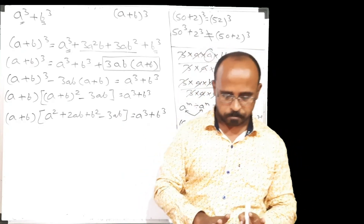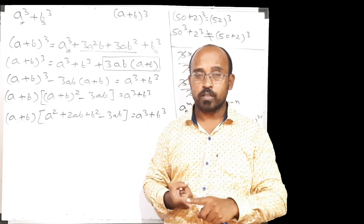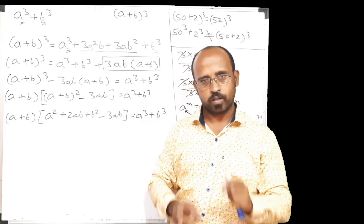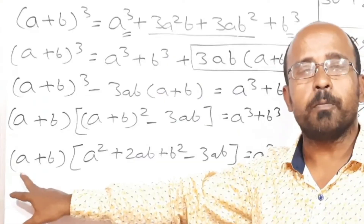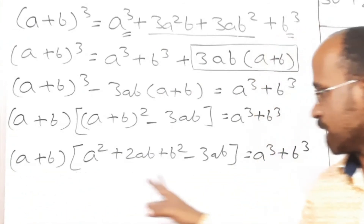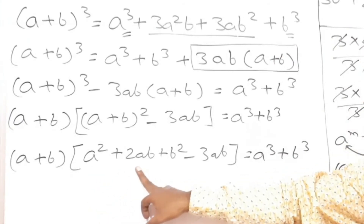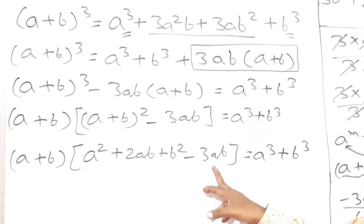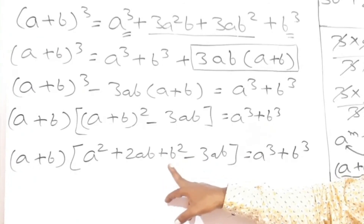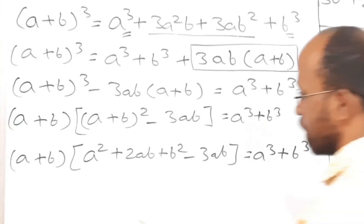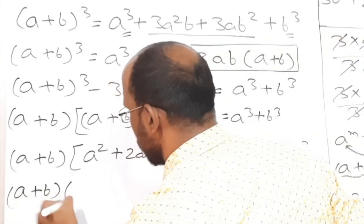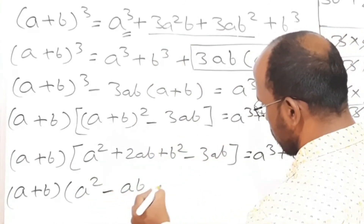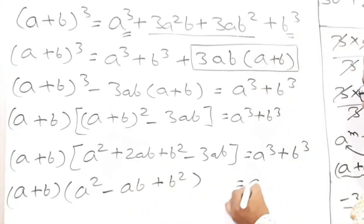While solving problems of factorization, if there are brackets, apply BODMAS on each and every bracket and see whether it is possible to find out anything common or not. In the first bracket, a plus b — addition and subtraction is not possible. In the second bracket, a square is alone and unlike. Plus 2ab has one like term, that is minus 3ab. So its addition and subtraction is possible, which we do according to BODMAS. Plus b square is alone and unlike, so let's keep it as it is. Our answer will be a plus b into second bracket: a square plus 2ab minus 3ab is nothing but minus ab, plus b square, which is nothing but a cube plus b cube.